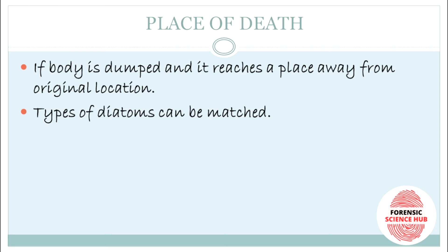Place of death can also be determined. If a body is dumped in water and moved to another location by water currents, the type of diatoms at the original location can be matched with the diatoms present in the body. If the same kinds of diatoms are found, we can determine where the body was originally dumped. However, this method is also not entirely reliable.